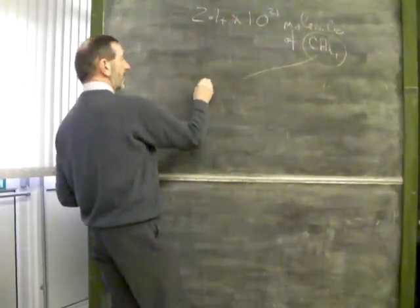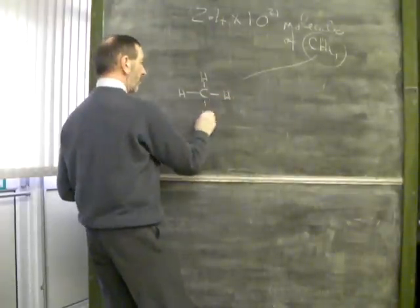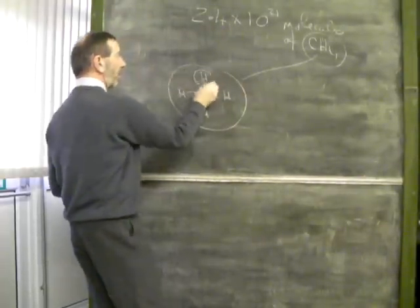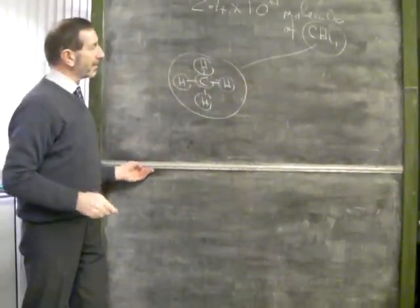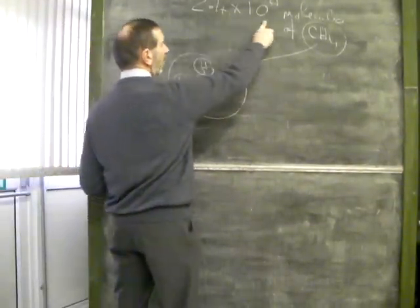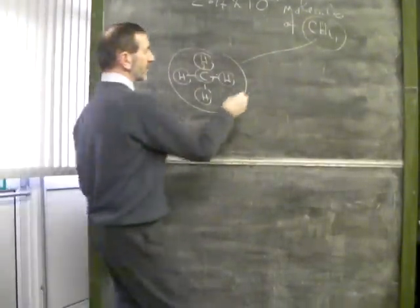CH4. CH4 represents a molecule of methane. And for every one molecule, we're dealing with 1, 2, 3, 4, 5 atoms. So, if we have this number of molecules, we'll need to multiply by 5 to find the number of atoms.